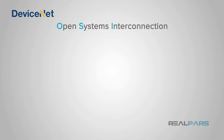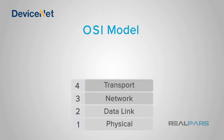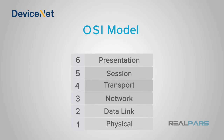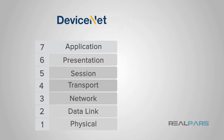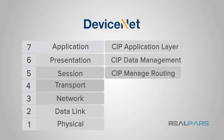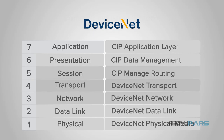DeviceNet follows the Open Systems Interconnection, or OSI, model that uses seven layers: Physical, Data Link, Network, Transport, Session, Presentation, and Application. It is based on the Common Industrial Protocol, or CIP, and uses the three upper layers of CIP starting at Session, while the bottom four layers have been adapted to the DeviceNet application.